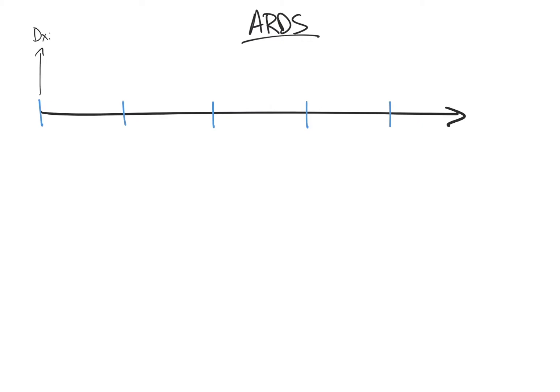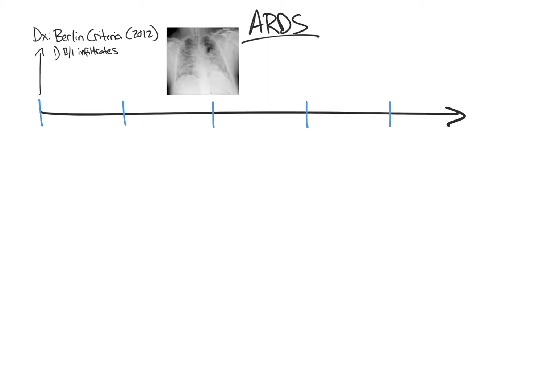We diagnose ARDS via the Berlin criteria. The Berlin criteria were created by an international panel of experts and published in 2012. First, a patient must have bilateral alveolar infiltrates, shown as a chest x-ray with the characteristic pattern.